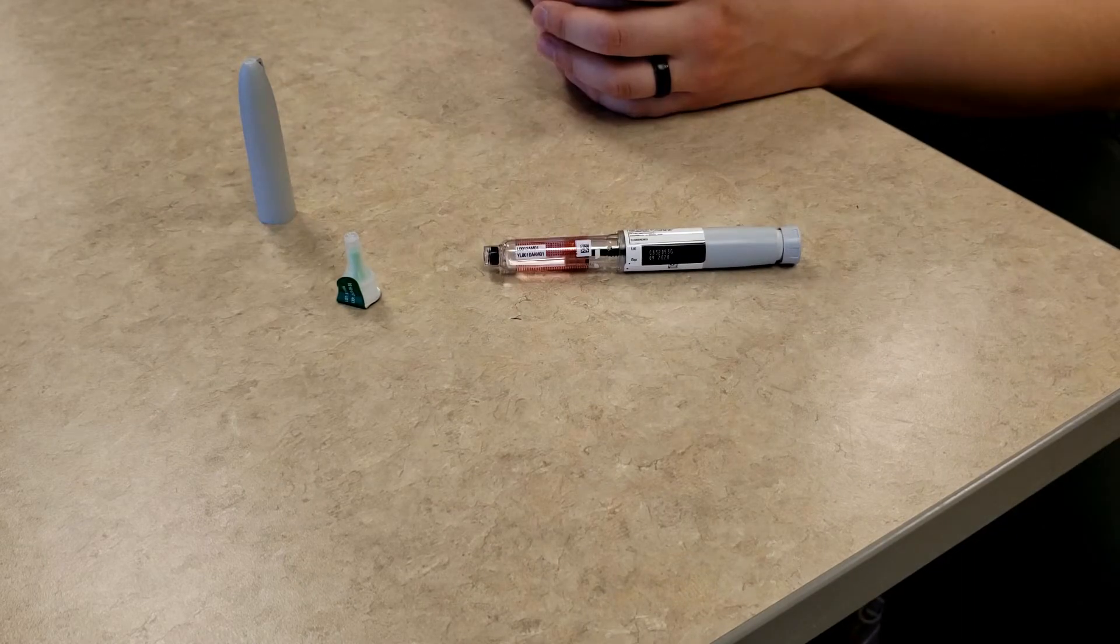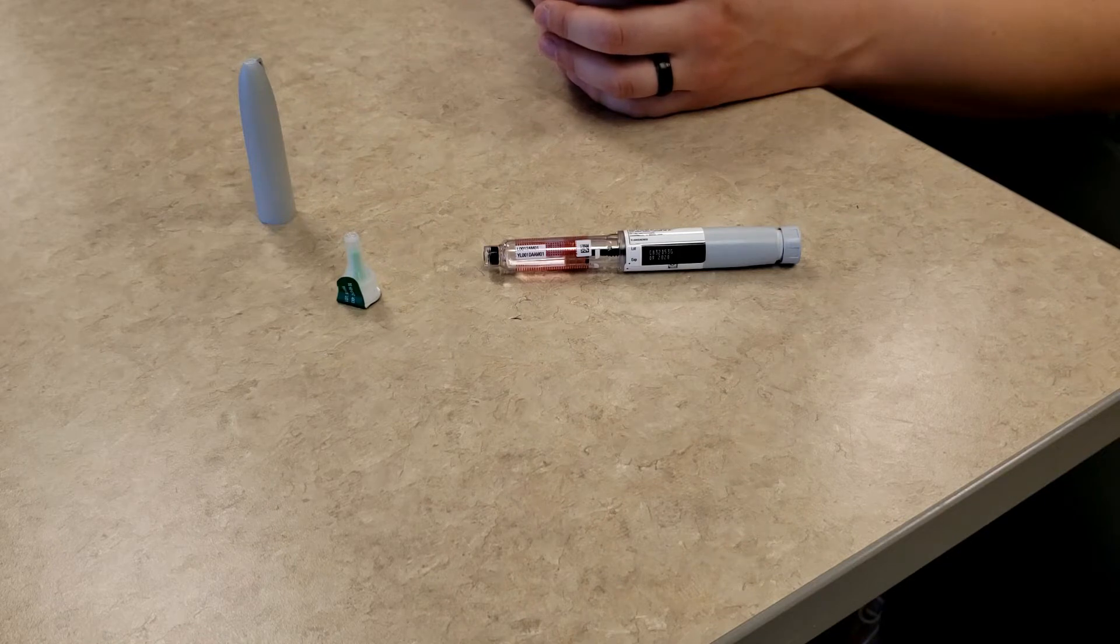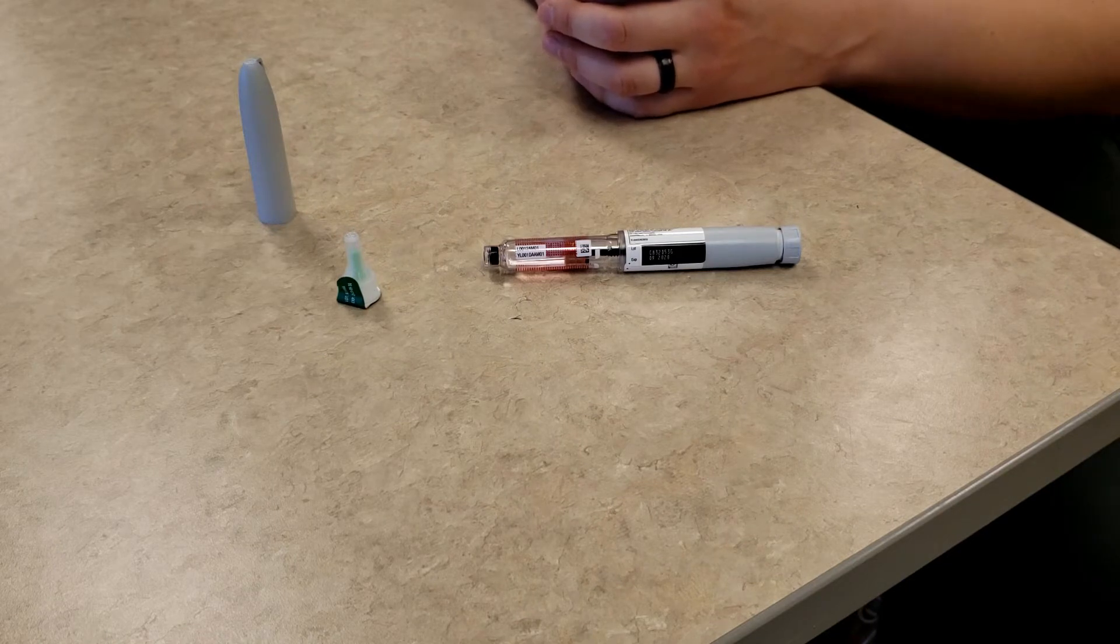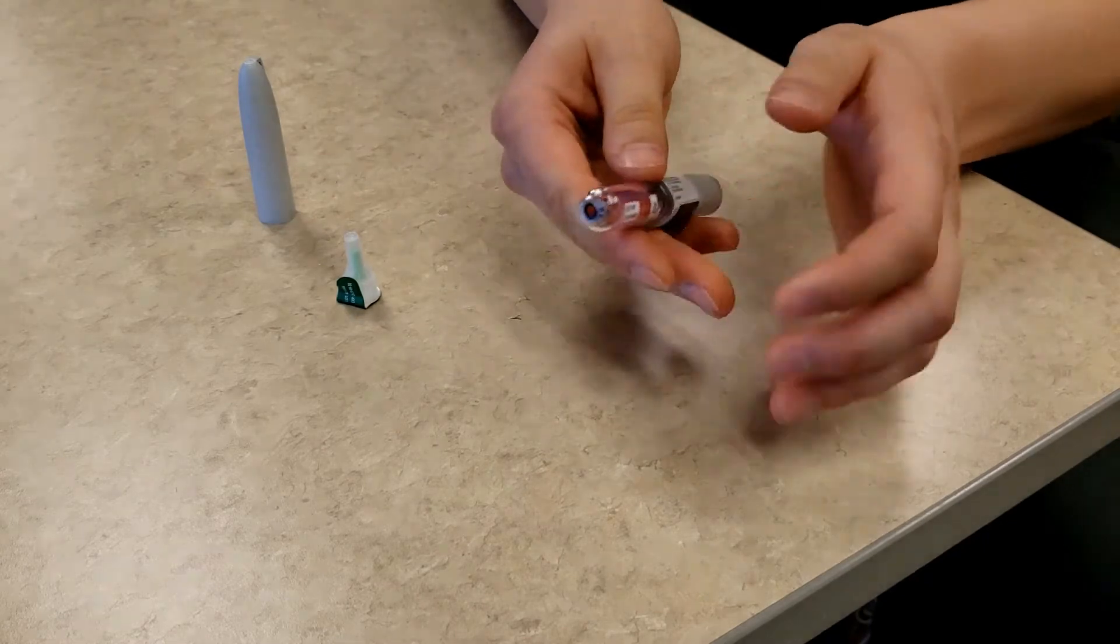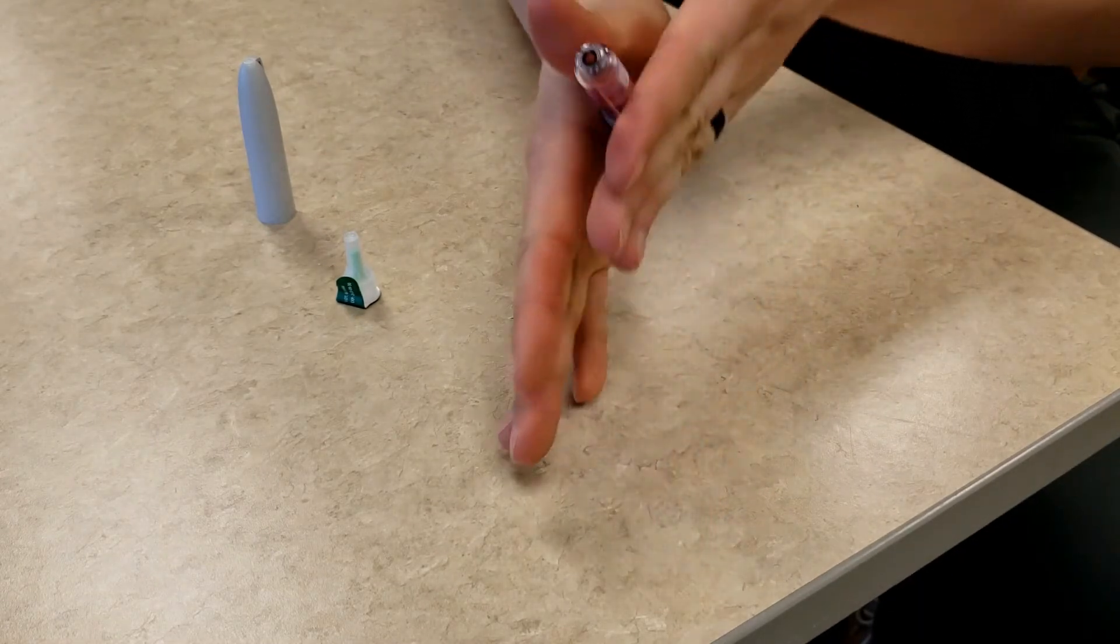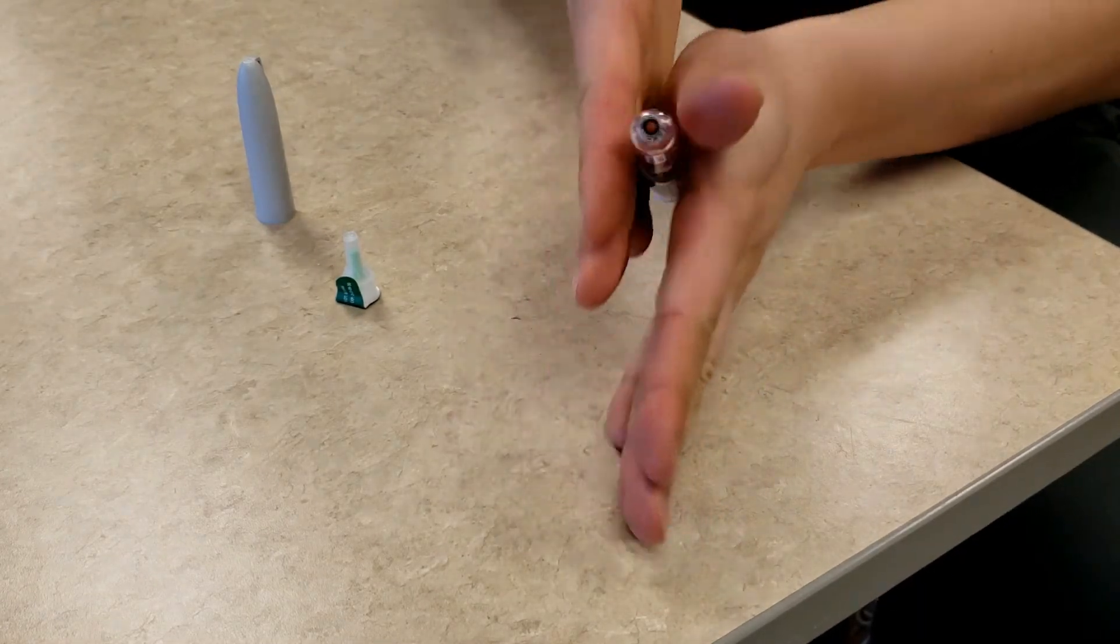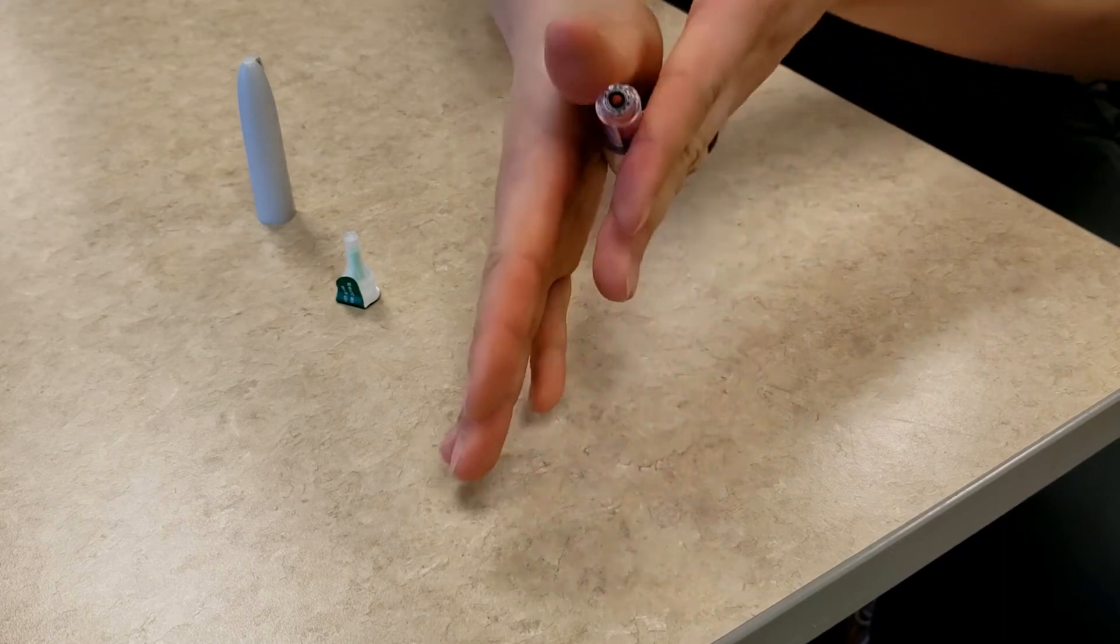If the type of insulin that you are using is NPH or premixed insulin, gently roll or rotate the insulin pen about 10 times. This is to ensure that the medication is evenly dispersed.